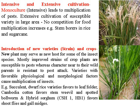Introduction of new varieties or strains of crops in new areas: the new plant may serve as a new host for some insect species. Most improved strains of crop plants are susceptible to pest attack. Varieties with favorable physiological and morphological characteristics cause multiplication of insects. For example, Sokland and other paddy rice varieties favor leaf folder; Cambodia cotton favors stem borer and spotted bollworm; and hybrid sorghum varieties such as CSH1 and HV1 favor shoot fly and gall midge attack in sorghum.